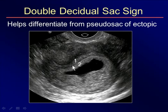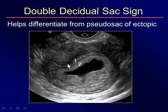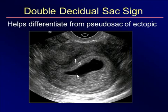Here's a situation where there's some fluid in the uterus that may look like a pseudo sac related to an ectopic. But if you look, there are two thick bands of echogenicity, which would push it toward an intrauterine pregnancy — probably a miscarriage in this case.